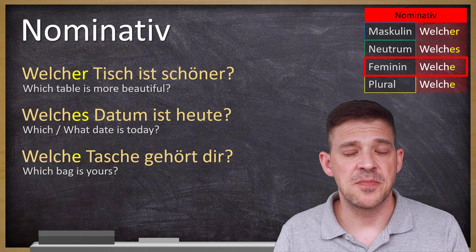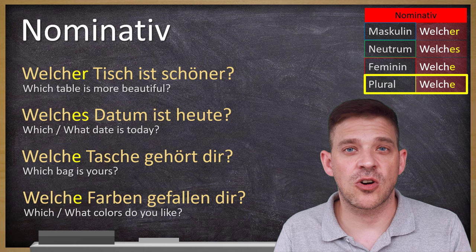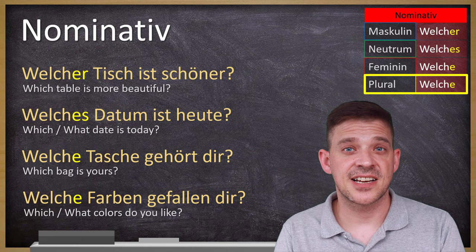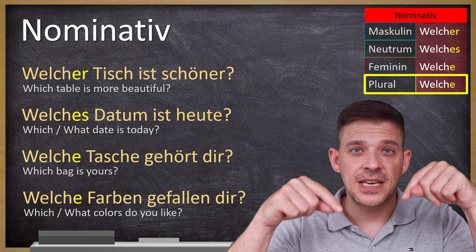Und im Plural: Welche Farben gefallen dir? — Which or what colors do you like? In the last two examples, the subject is actually the thing, and you are the object. That's because of those special verbs gehören and gefallen. More about those verbs you can find in the video linked in the description.